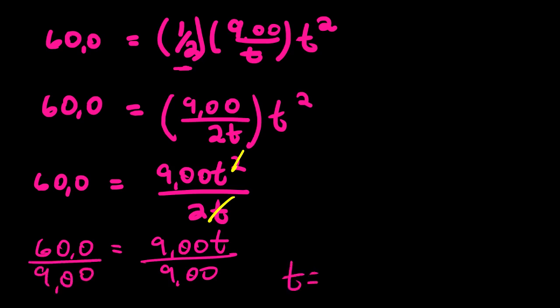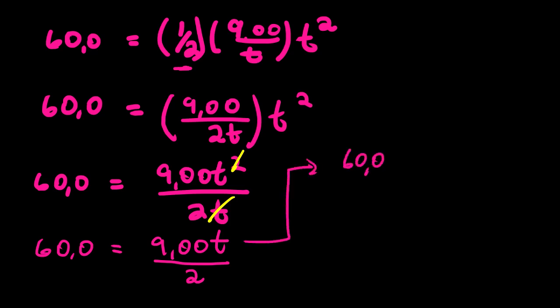Actually before we continue, there's a problem here. Sorry about that. You should be very careful when dealing with this. Removing the t will be left with over 2 here. We can continue. We have 60.0 equals 9.00 divided by 2, we have 4.5t. That is when we can divide by 4.5 both sides, and then t equals 13.33 seconds.